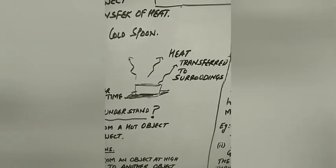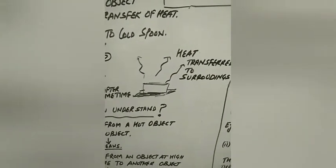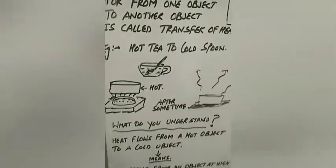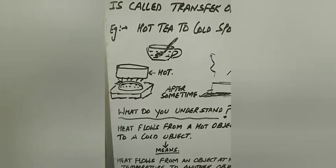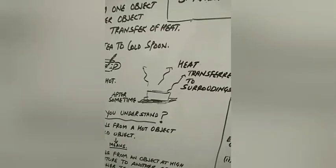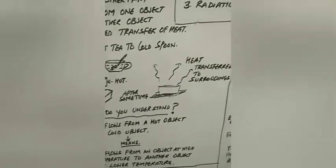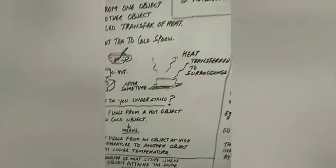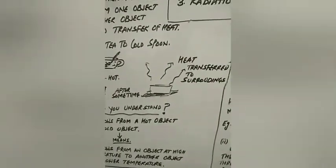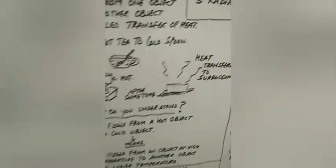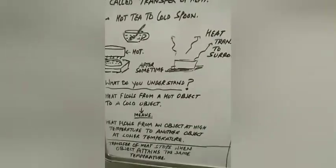When we placed a spoon into hot tea, the spoon became hot. When we placed a pan on the burner, the pan became hot. And when we placed the pan on the shelf, it cooled down. This is happening because of heat transfer — when heat is given to an object its temperature rises, and when heat is removed from an object its temperature becomes low.